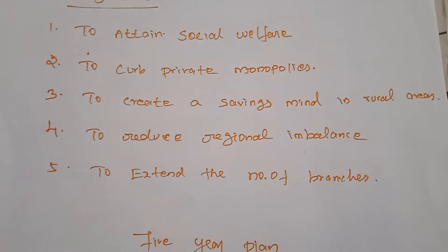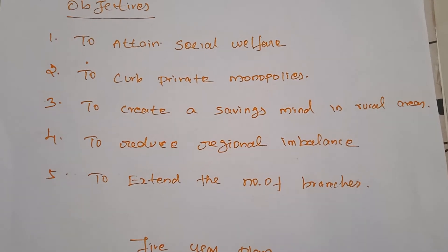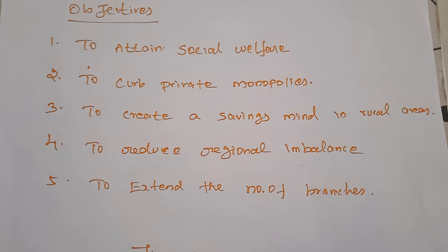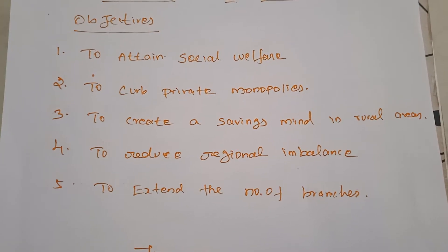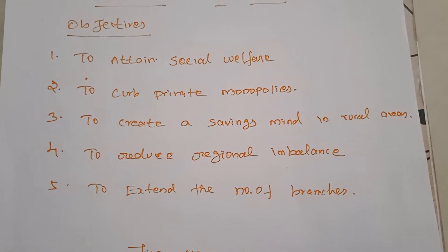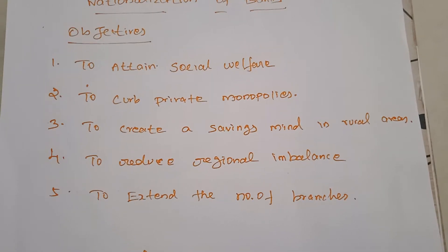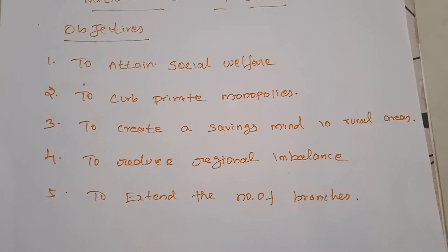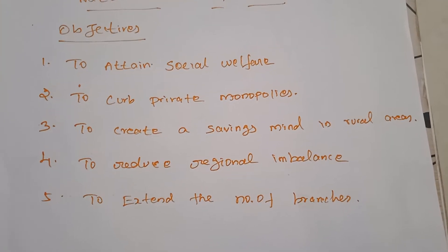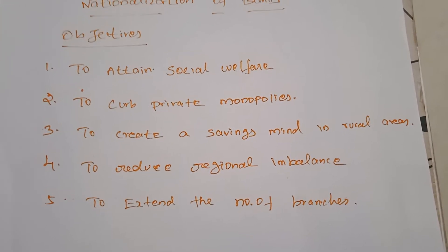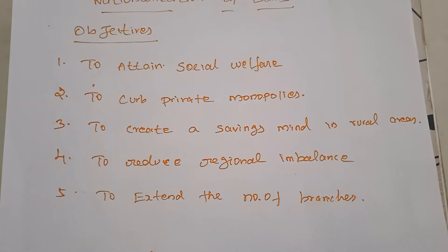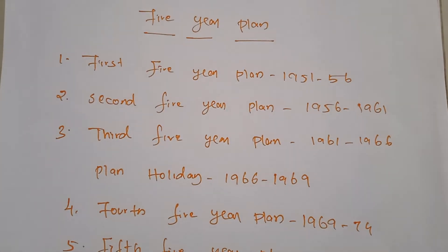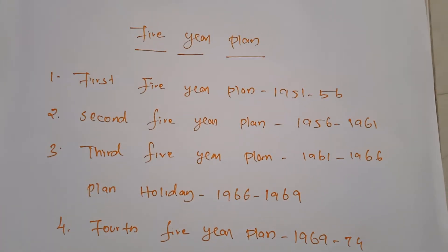The main objective of nationalization of banks was to attain social welfare, because both state and central governments wanted to provide social welfare to their people. Sectors such as agriculture, small-scale, and village industries were in need of funds for their expansion.